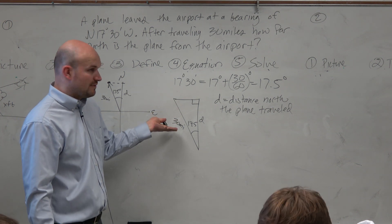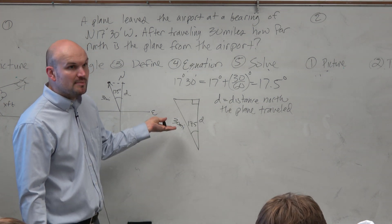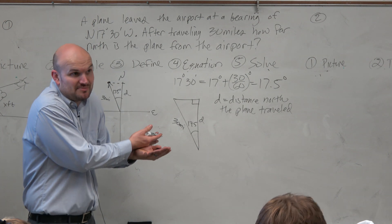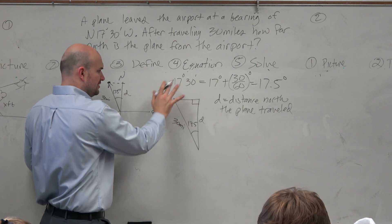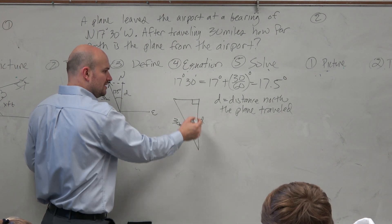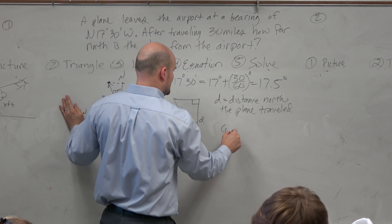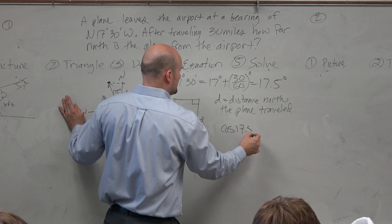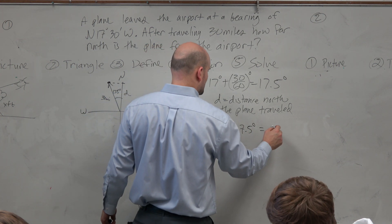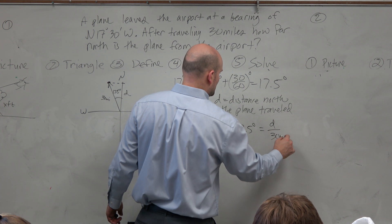Now, again, based on this triangle, can we write a trigonometric equation? Remember, this is like the beginning of class period, right? Once you do all this, you identify your variable. You have your picture. You have your triangle. Now we could say, yeah, that looks like the cosine of 17.5 degrees is equal to D over 30 miles.